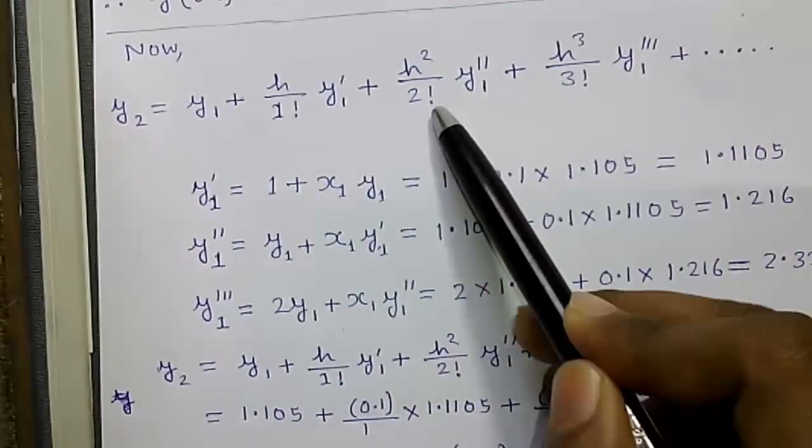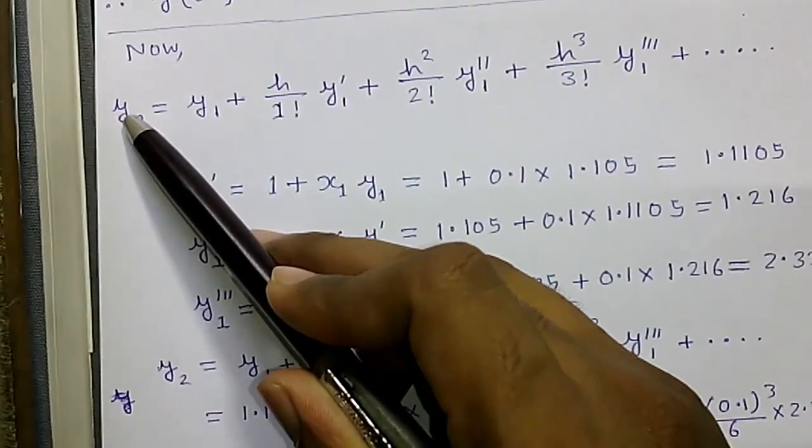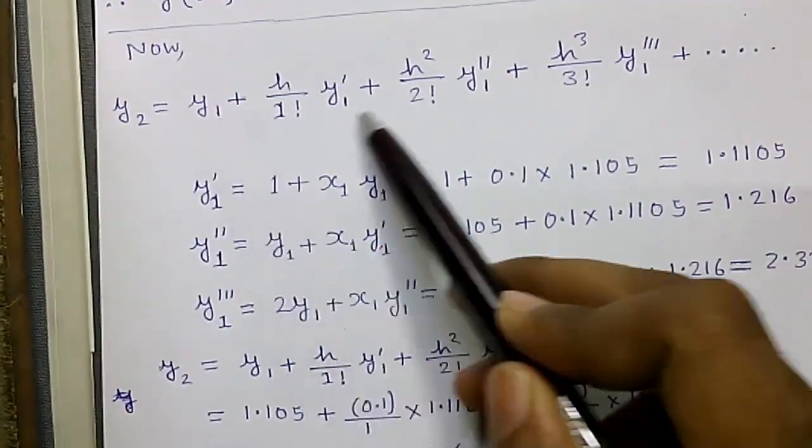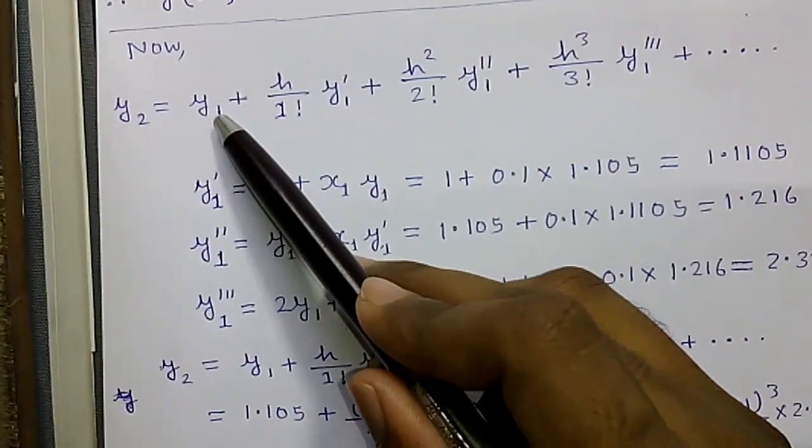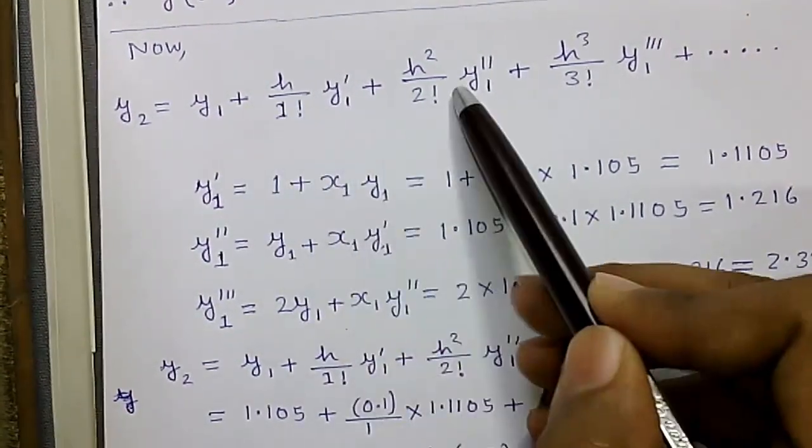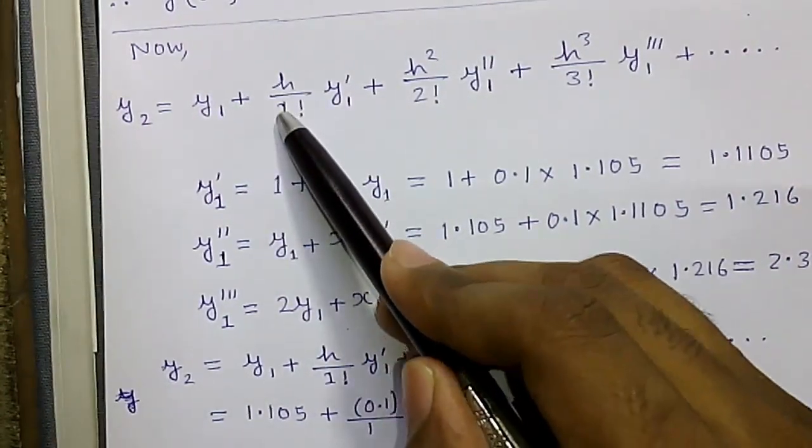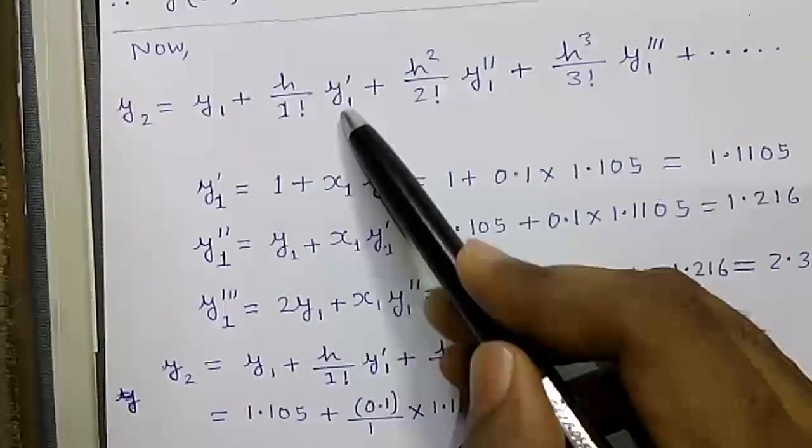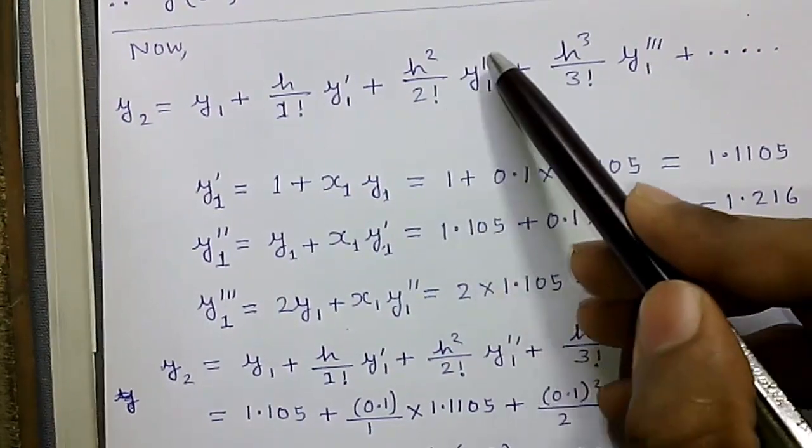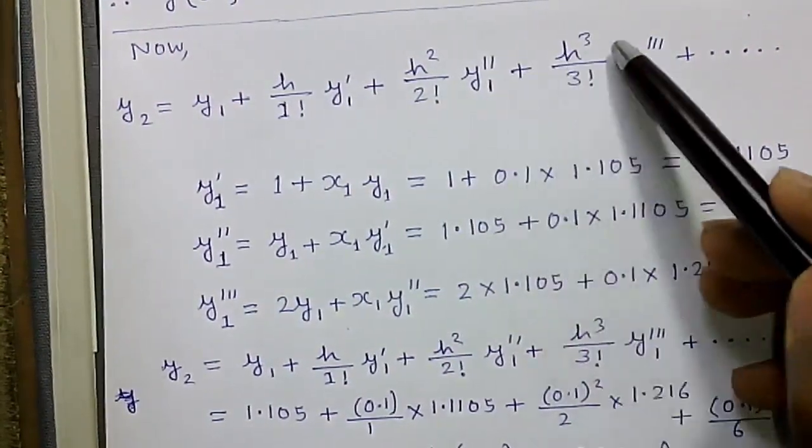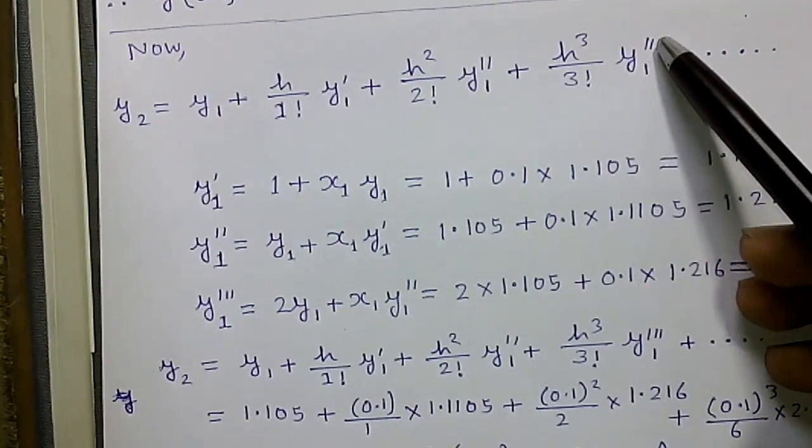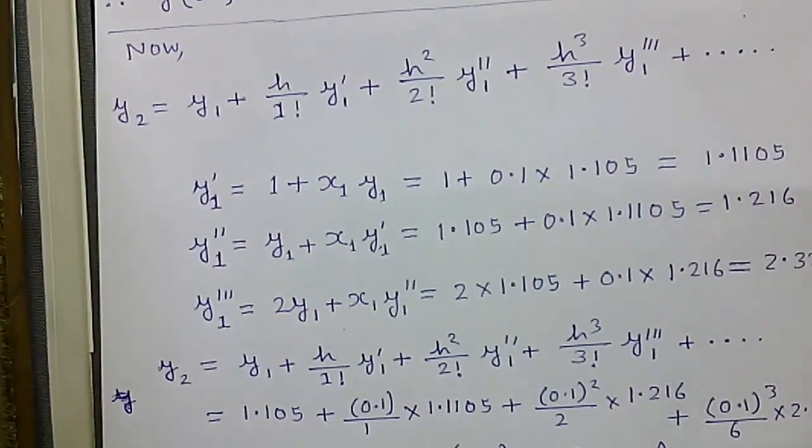Now for the second iteration our y value will be y2 and all the y values will be incremented by 1. So previously it was y0's, now they are all y1's. So y2 = y1 + h/1!·y'1 + h²/2!·y''1 + h³/3!·y'''1 and so on.